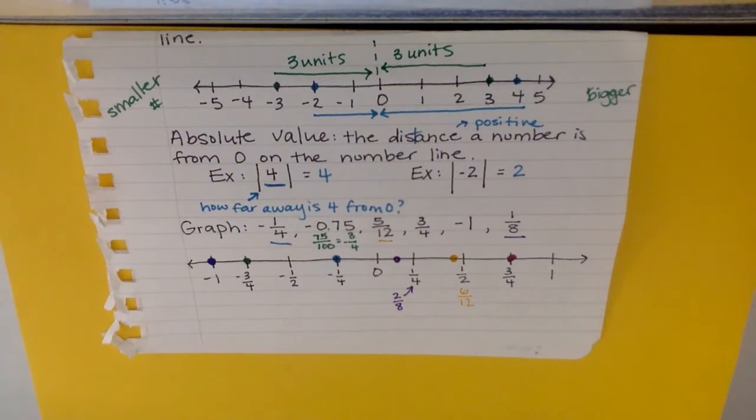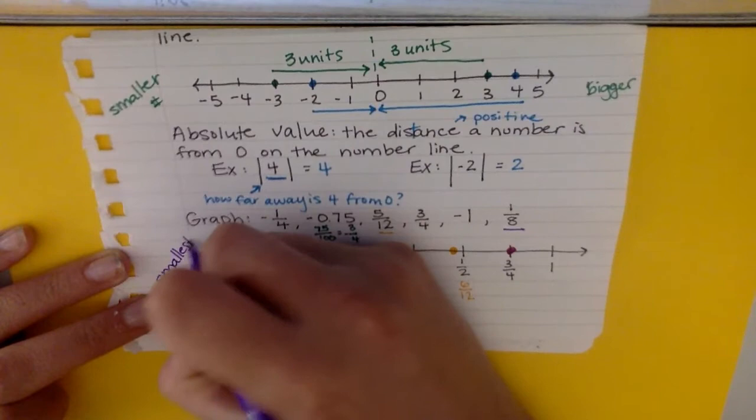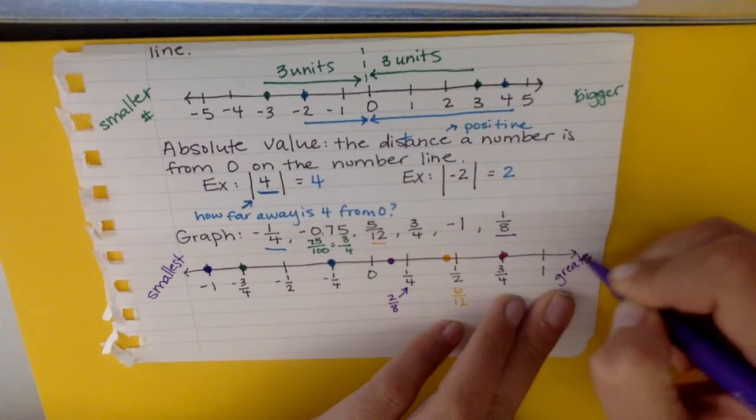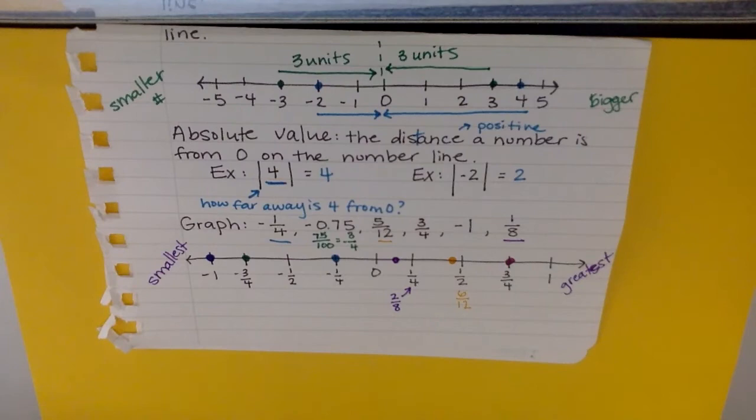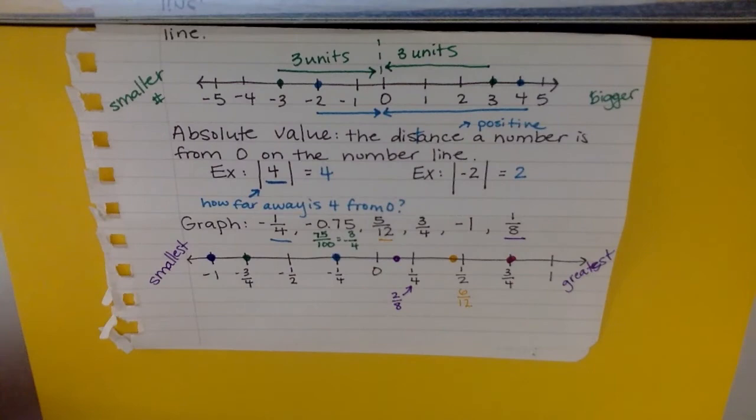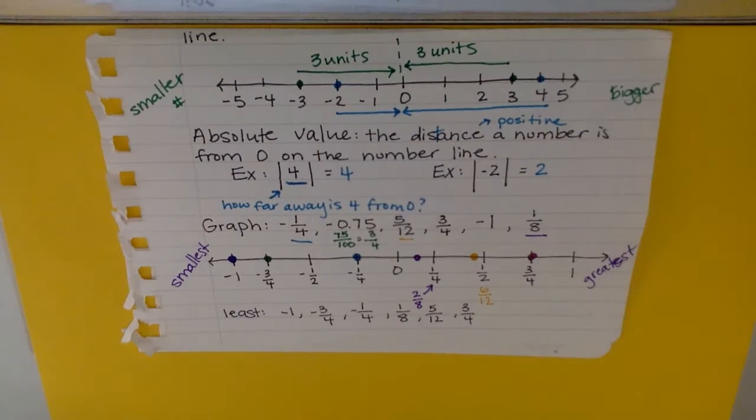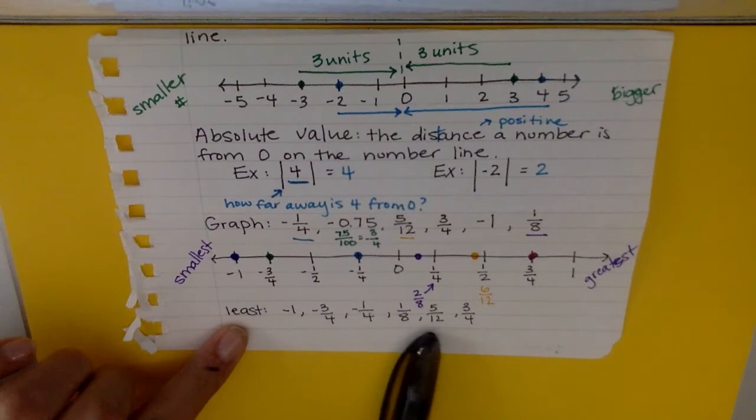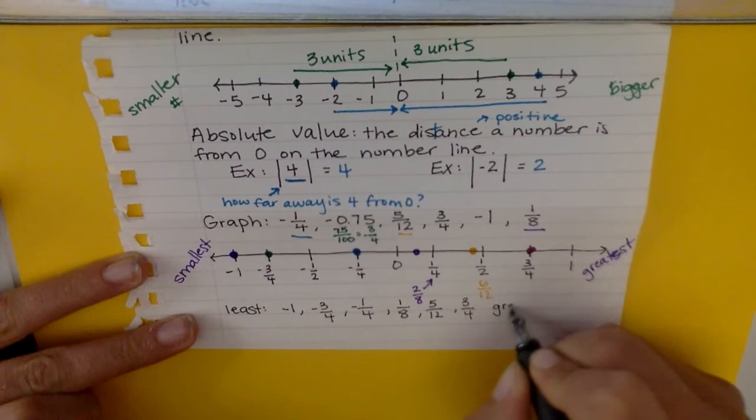Looking at this data, I can now tell which is my smallest value and which is my greatest, based on how far away they are from zero. So my smallest value is going to be negative one, and my greatest value is going to be three fourths. So if you could pause the screen and go ahead and order these from least to greatest and then come back and check and see if you got it right. All right, so your line, your set of data, should be ordered this way with negative one being the least and three fourths being the greatest.